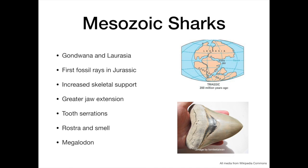As well as the first fossil evidence of rays, the sharks of the Mesozoic were undergoing significant evolutionary changes, resembling modern sharks more and more. This included increased skeletal support, greater jaw extension, and tooth serrations. Furthermore, the elongation of shark snouts into rostra suggests that smell became a more important sense during this time.